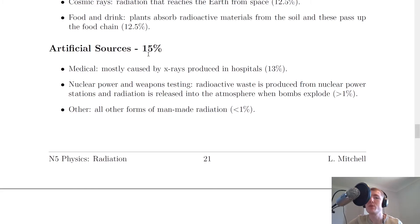And then we have artificial sources, which contributes about 15% overall. So as we saw earlier, this is composed of medical sources, so mostly caused by x-rays produced in hospitals. And this accounts for about 13% of all background radiation.